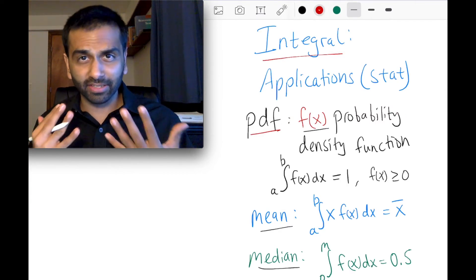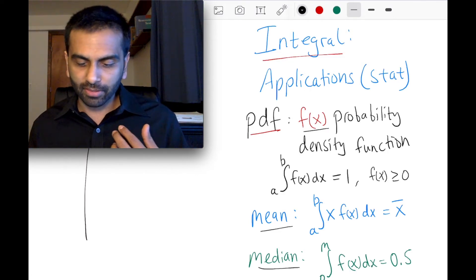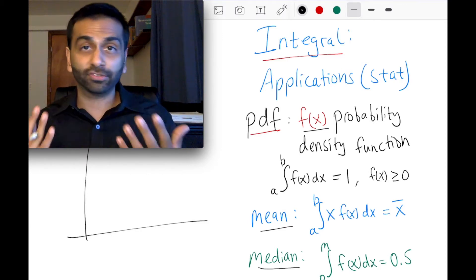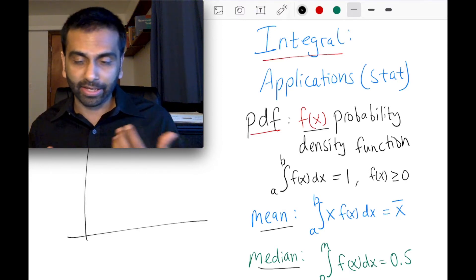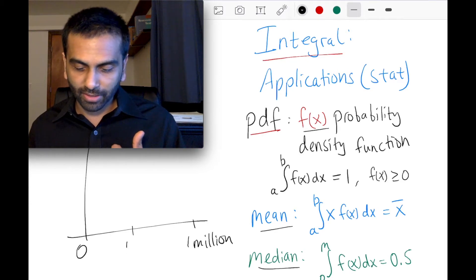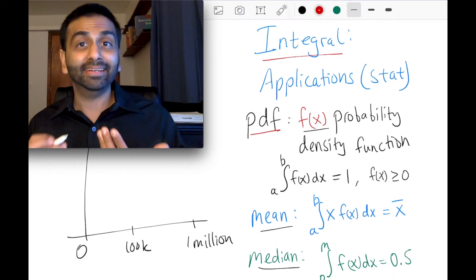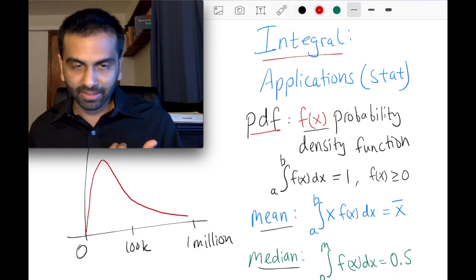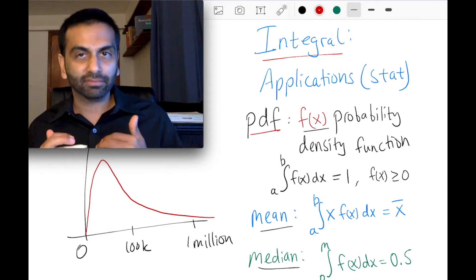Essentially, a PDF is just the distribution of the possible values that a variable can take on. So if you're interested in looking at income, and if the various incomes in the world ranged from $0 to $1 million, but most of them were between $0 and $100K, then the PDF — the probability density function of those incomes — looks something like this. The Y value is talking about the frequency of that level of income.